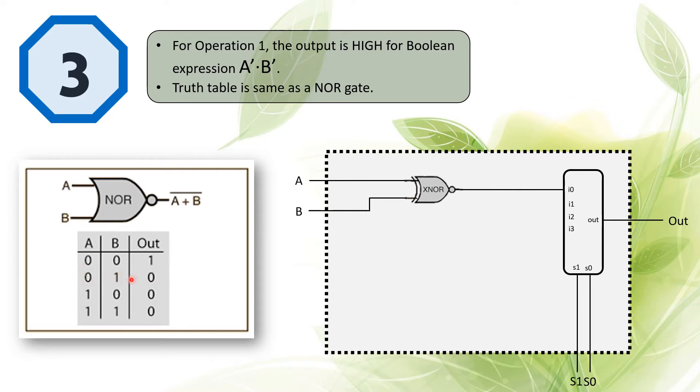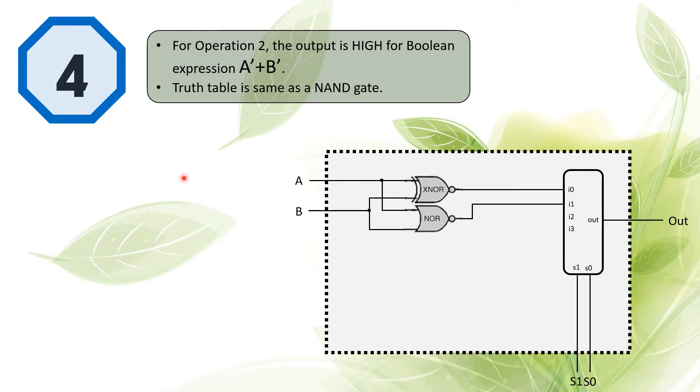We only have the output as one. So we add another NOR gate to the I1 of the four-to-one multiplexer and connect it as shown in the figure.